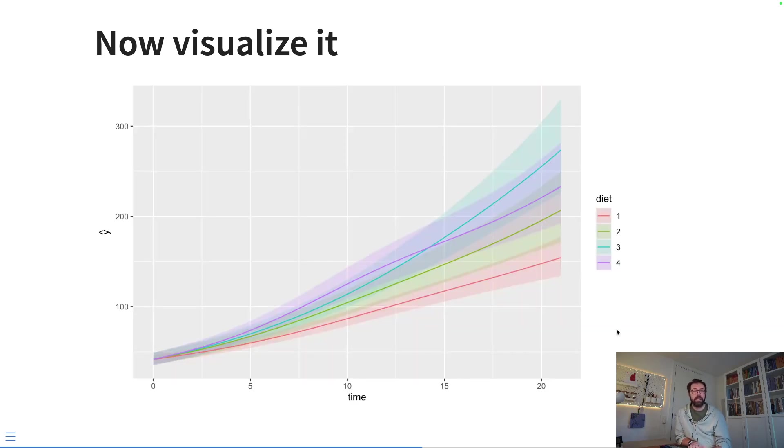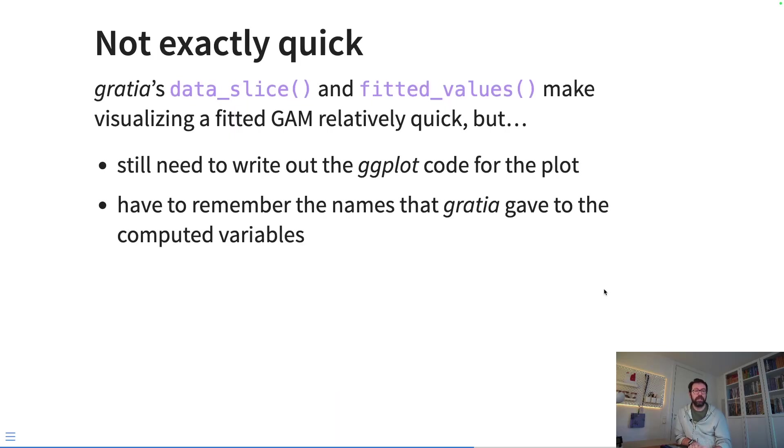And this is what it looks like using the default discrete palette. We get a nice plot and we can start to understand a little bit about how the diets might be affecting the weights of the chicks on average.